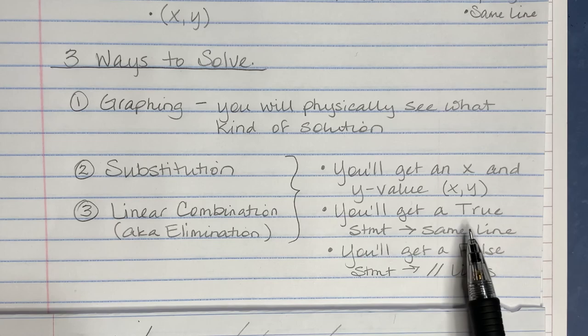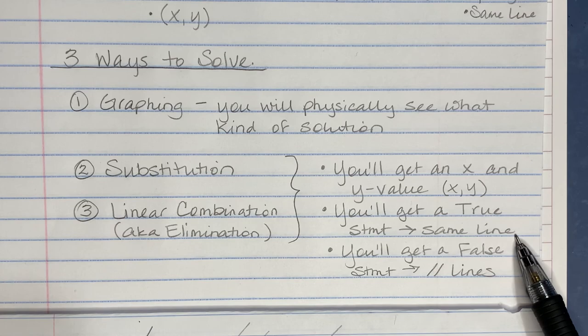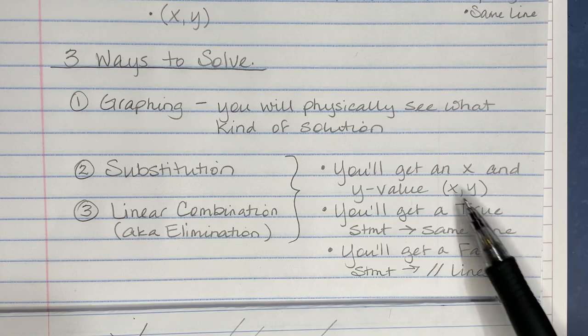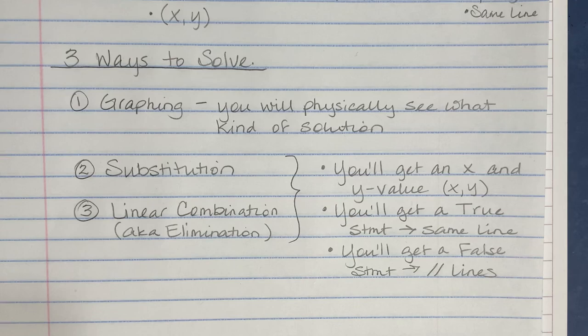However, if the lines are the same line, when I solve the equations I'll get a true statement — something like zero equals zero — which is always true. That means the lines are actually the same. If instead I get a false statement, like eight equals zero, then these lines are going to be parallel and will never intersect. So these are the types of solutions you can possibly get when solving a system of equations.